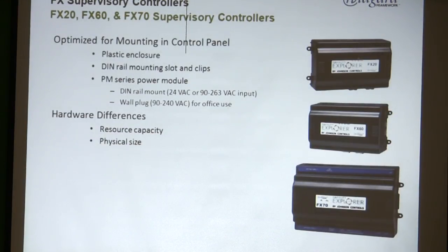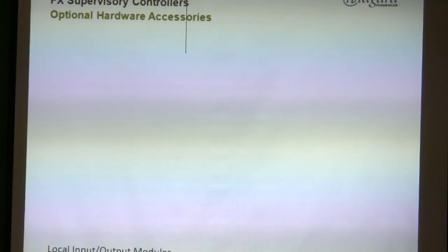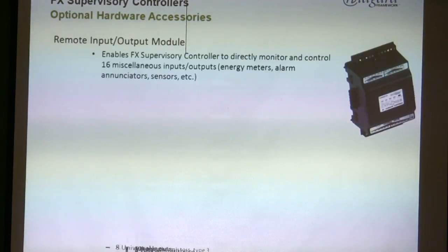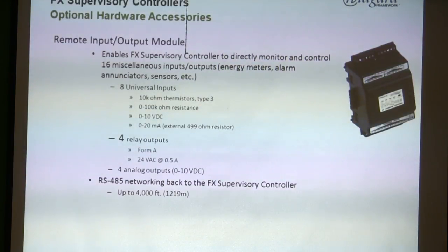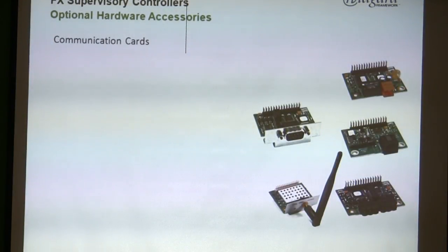The FX-60 and FX-20 are the same physical size; the FX-70 is much bigger. They're all DIN-rail mountable and wall-mountable. There are different power supply options — a wall module and a DIN-rail power supply that plugs right into the Jace. I'll touch on your question: there are three different sizes based on what they're able to handle in terms of network activity and points.